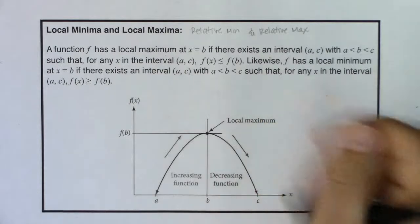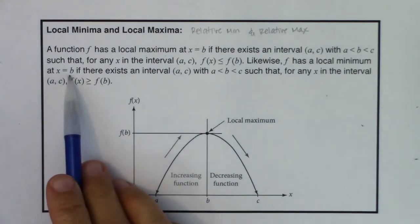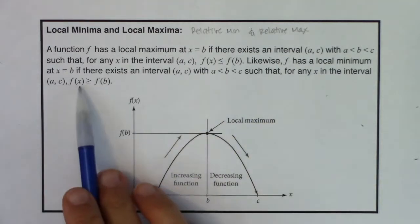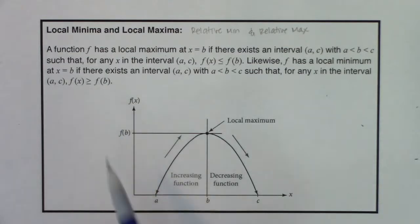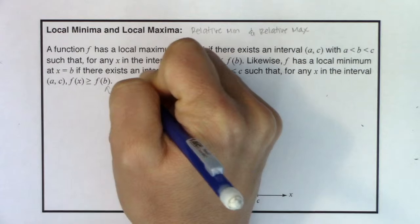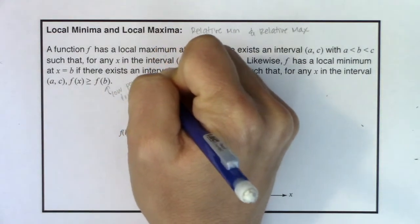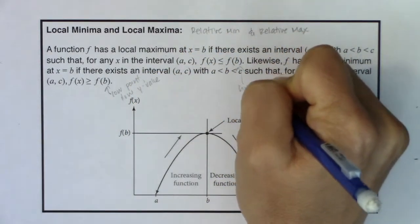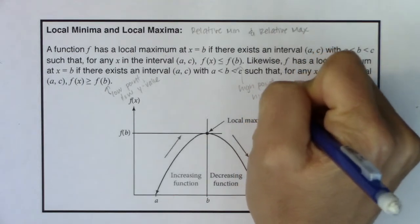On the flip side, you have a local minimum if there's a point b in your interval such that for any x in that interval, f of x is greater than or equal to f of b — meaning this is the low point. So a local min means a low y value, and a local max means a high y value.